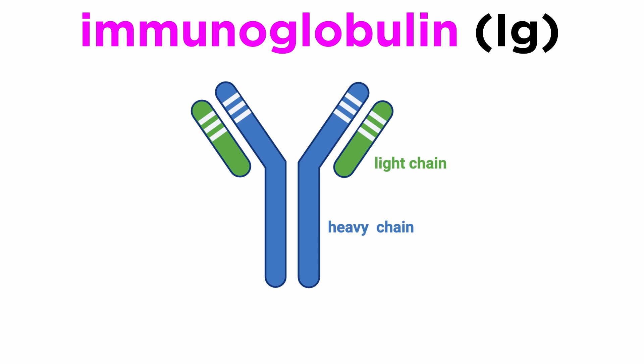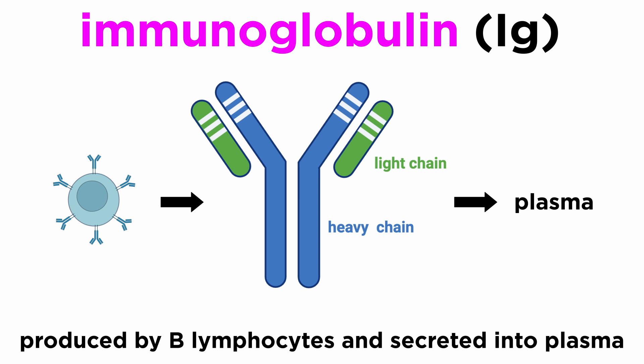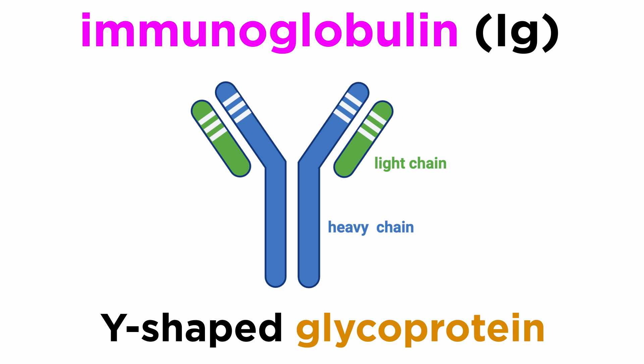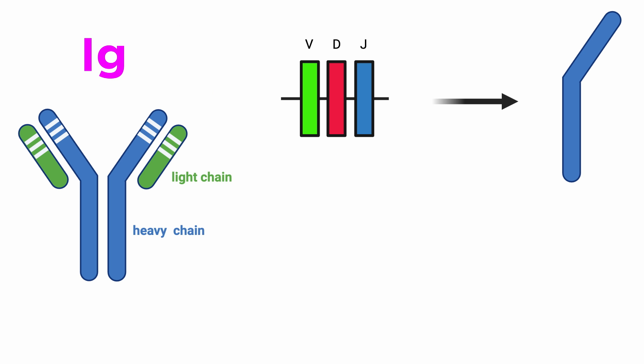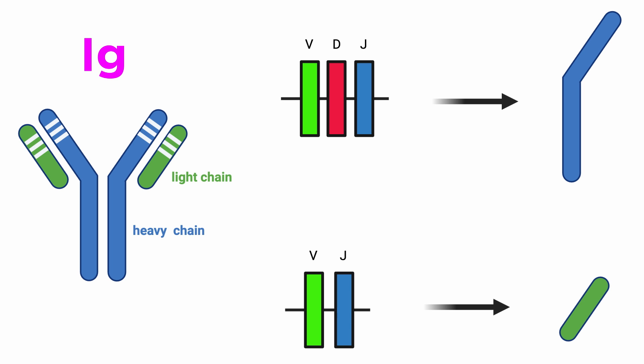Immunoglobulins, or IGs, are produced by B lymphocytes and secreted into plasma. The IG molecule in monomeric form is a glycoprotein that is shaped more or less like a Y. The basic structure of the IG monomer consists of two identical halves connected by two disulfide bonds, each half made up of a heavy chain and a light chain. The IG heavy chains are encoded by recombined VDJ genes, while VJ rearrangements encode the immunoglobulin light chains.